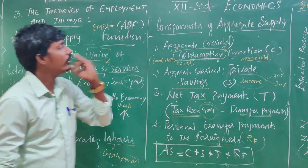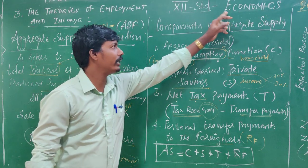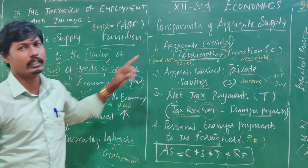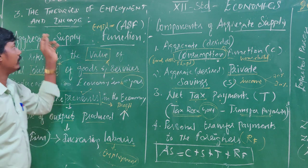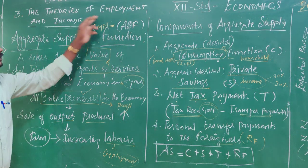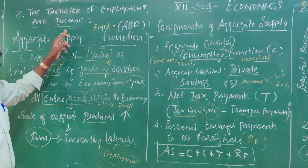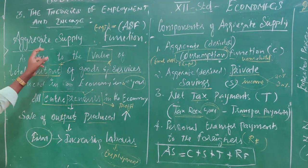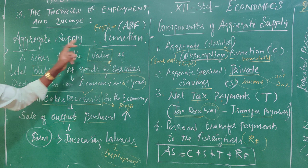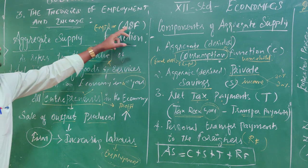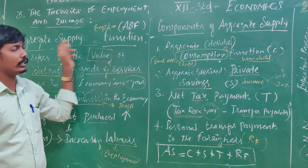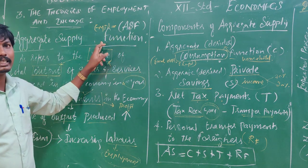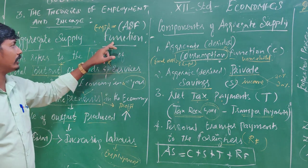Dear students, go to the subject for economics in 12th, chapter 3, theories of employment and income. The topic is the aggregate supply function, ASF — aggregate supply function.